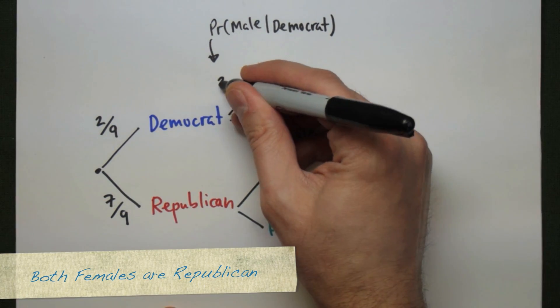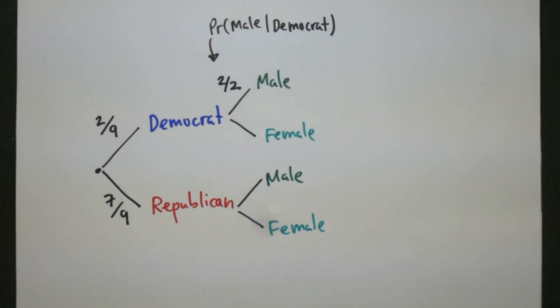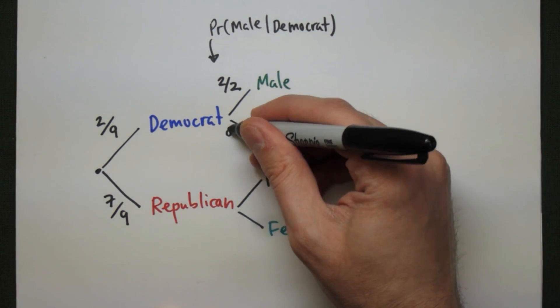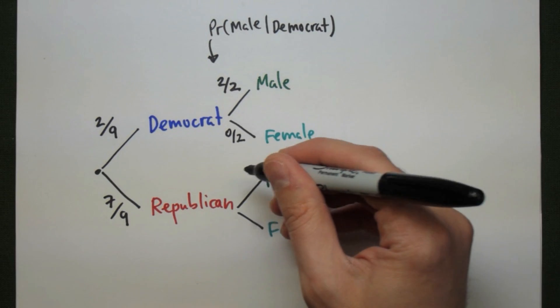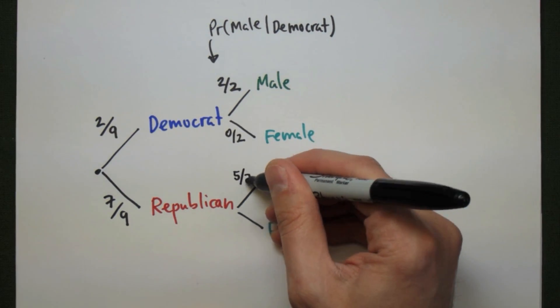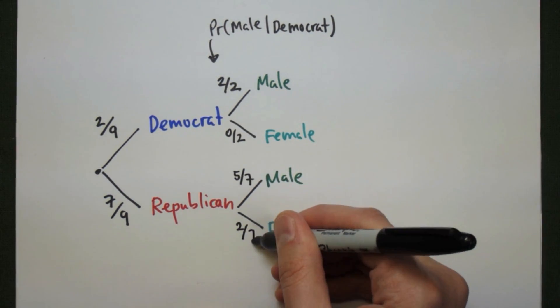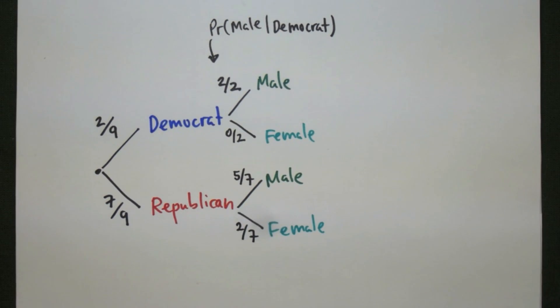Both the females are Republican, so all two of the Democrat representatives are male. So two out of two, which makes this zero out of two. Then for the Republicans, there are seven Republicans, five of them are male, and two of them are female. So five-sevenths and two-sevenths.